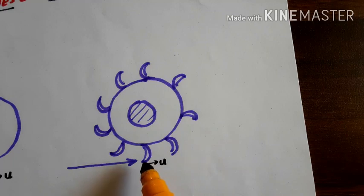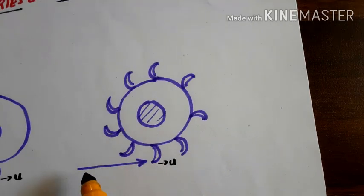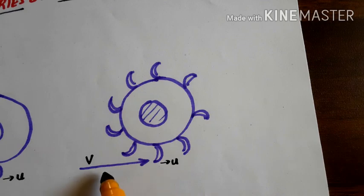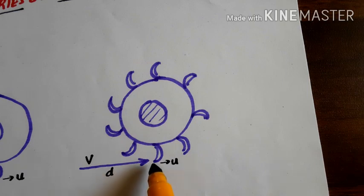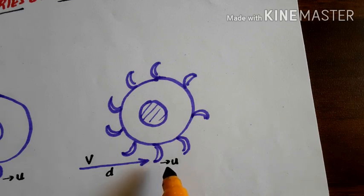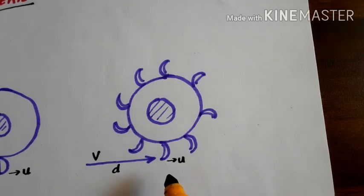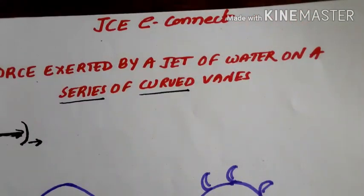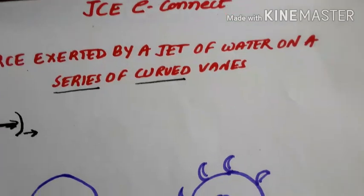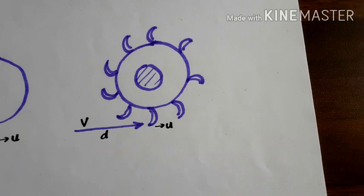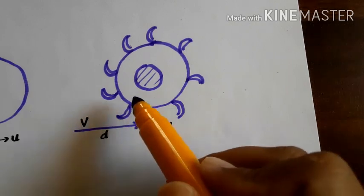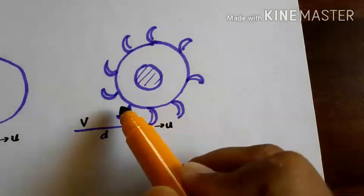Let us consider this case: a jet of water of velocity V and having a jet diameter d, striking the vane at the center, and the vane is moving with a velocity u. Let us derive the equation for the force exerted by a jet of water on a series of curved vanes. This is very important and also practically feasible.